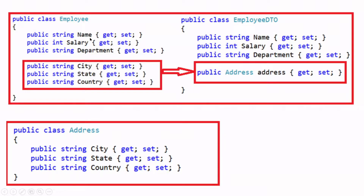So we have a situation where we need to copy data from primitive type properties to a complex type property, because the Employee class does not have any complex type property — all properties are primitive type only. But the EmployeeDTO class has a complex type property as well. So in this situation we have to write some special code to copy the data from the primitive types into the complex type property.